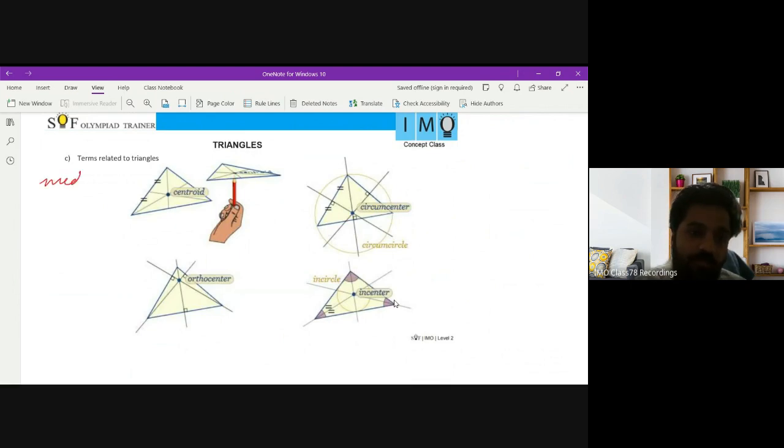Are you aware of the term median? Let's draw any triangle. A median is a line that joins the midpoint of one side to the vertex. The point where the medians intersect is called the centroid. So a centroid is formed with the intersection of medians.